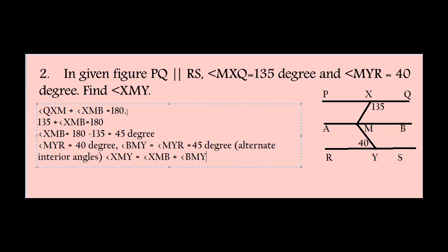So, angle XMY equals angle XMB plus angle BMY, that is 45 degrees plus 40 degrees, which equals 85 degrees.